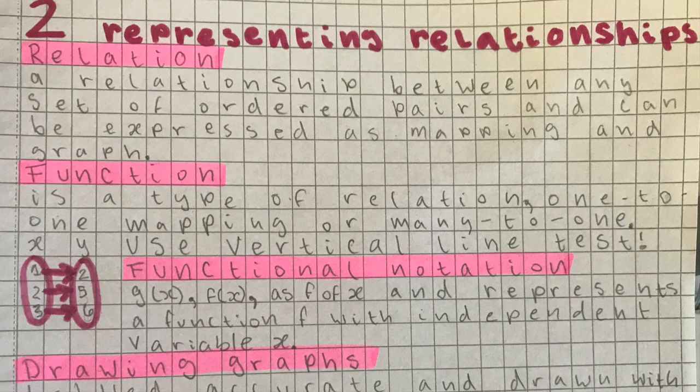To see if something is a function or not, you can use the vertical line test. Take a ruler, make it vertical, and go across your graph. If at any point two points are touching the ruler, then it is not a function. If at all times only one point is touching the ruler, then it is a function. This is because on a graph, the horizontal axis represents the X value, while the vertical axis represents the Y value.